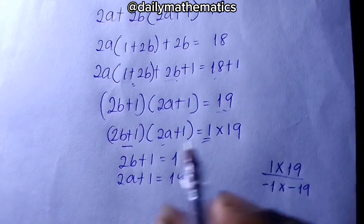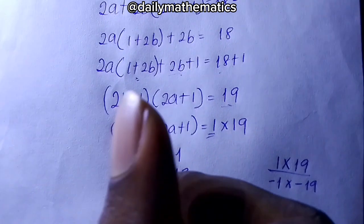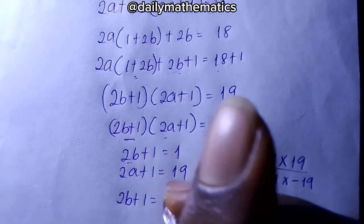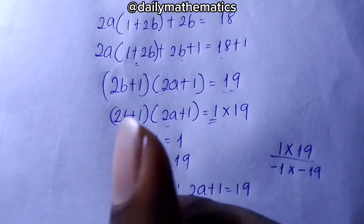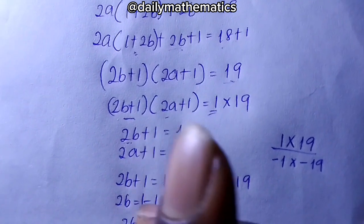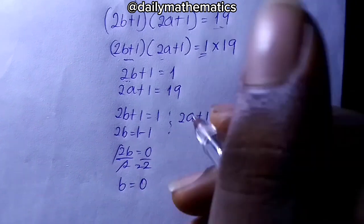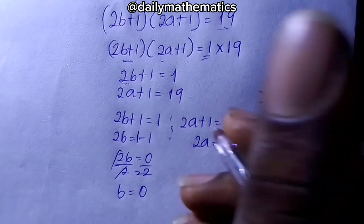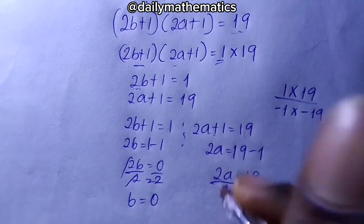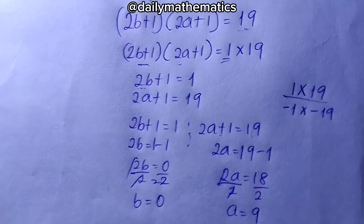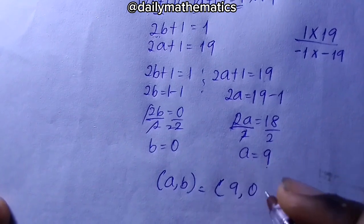Each equation has only one letter, so they're straightforward to solve. From 2b plus 1 equals 1: 2b equals 0, so b equals 0. From 2a plus 1 equals 19: 2a equals 18, so a equals 9. So from Case 1 using the first factor of 19, we get a equals 9 and b equals 0.